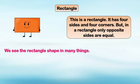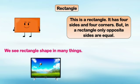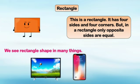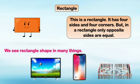Let's see a few examples related to rectangle. We see rectangle shape in many things. For example, a television is similar to rectangle shape. Next, a mobile phone is similar to rectangle shape. And a train — this shape is also similar to rectangle. These all are examples of rectangle shape.